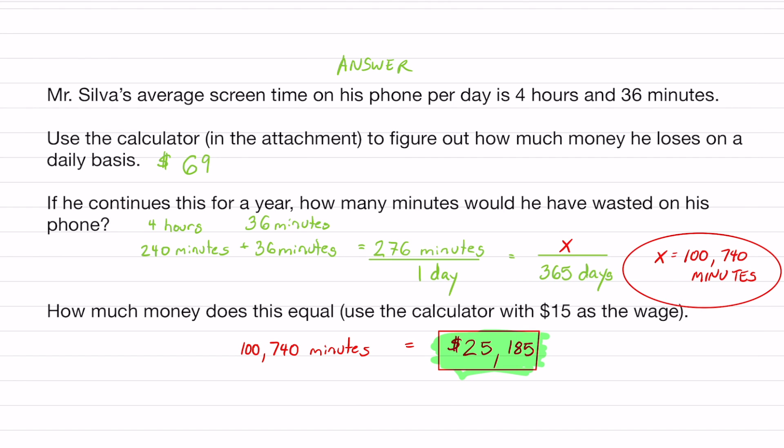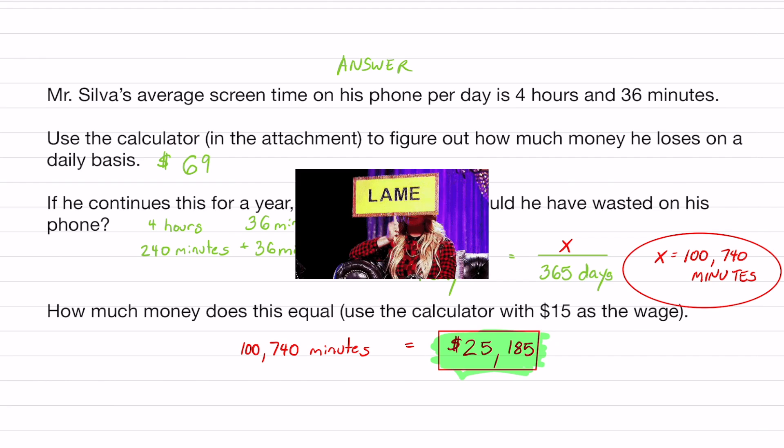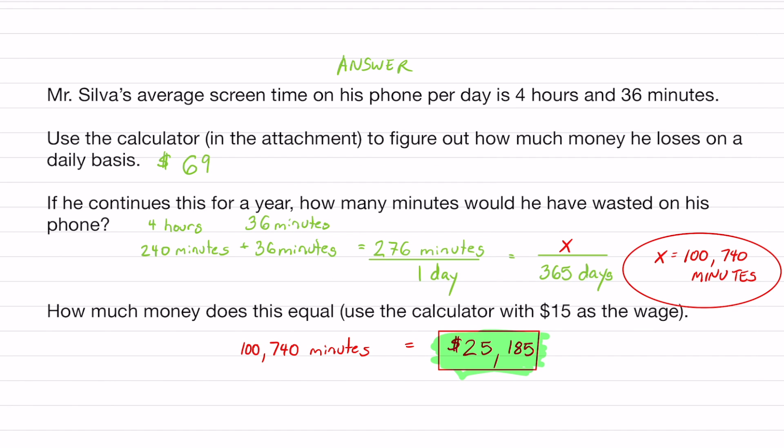And that is about $69 a day. To be honest, you could just multiply this number by 365 to get this number right here. But what would be the fun of that? I want you guys to learn about ratios.